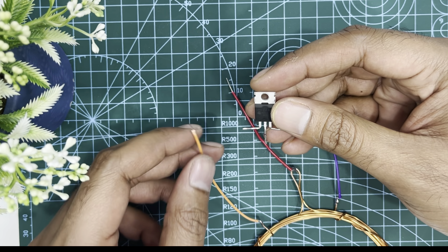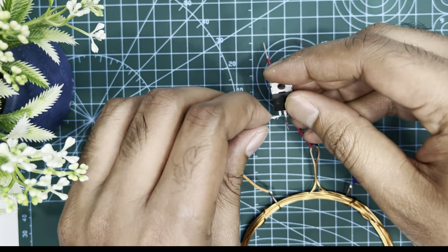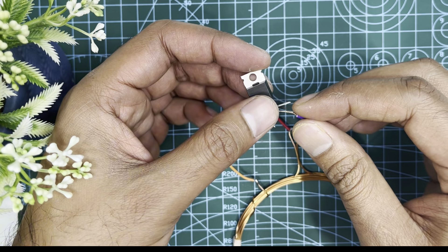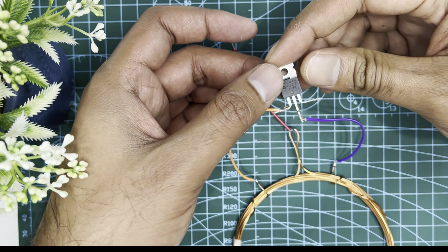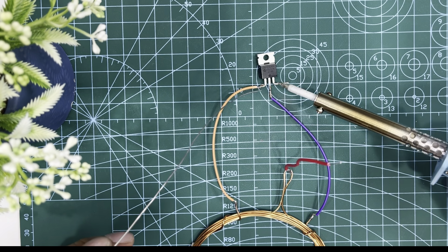Let's connect the gate with one terminal of the coil, then connect the drain with another terminal of the coil. Let's solder this.